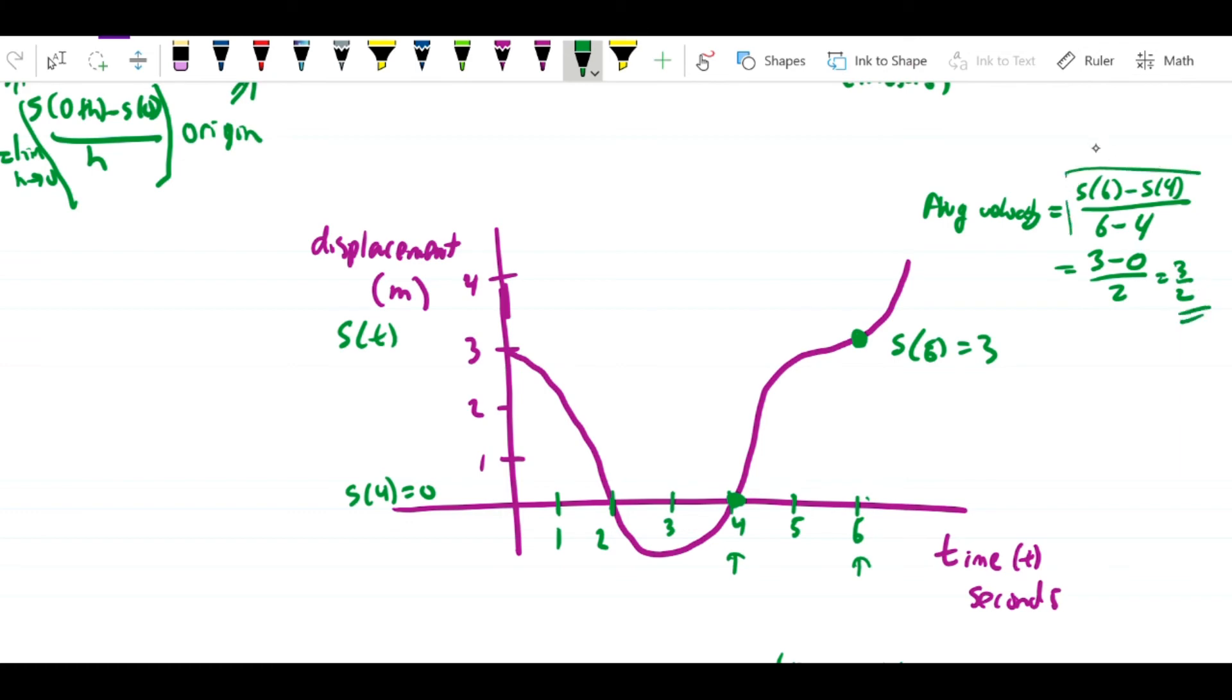But notice that this calculation is also the slope of the secant line. If I were to draw this line through here, the slope of that secant line is actually equal to the average velocity.